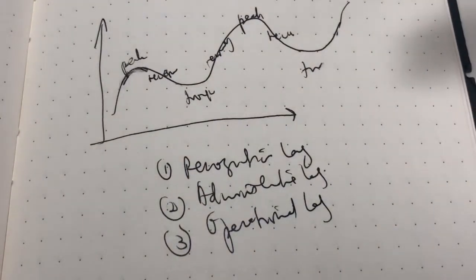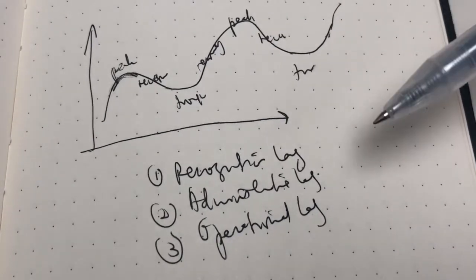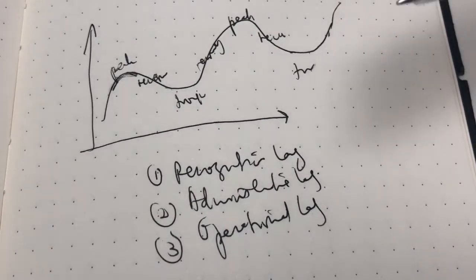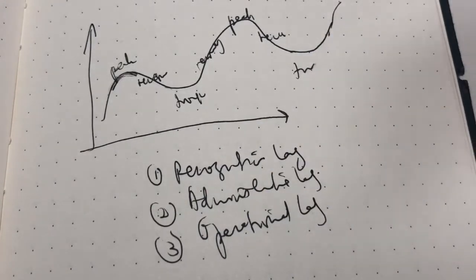This is basically the time between changes in fiscal policy and the effects that it would have on income, price, as well as employment. Taken all together, all of these lags would just contribute to the problems of timing of fiscal policy.